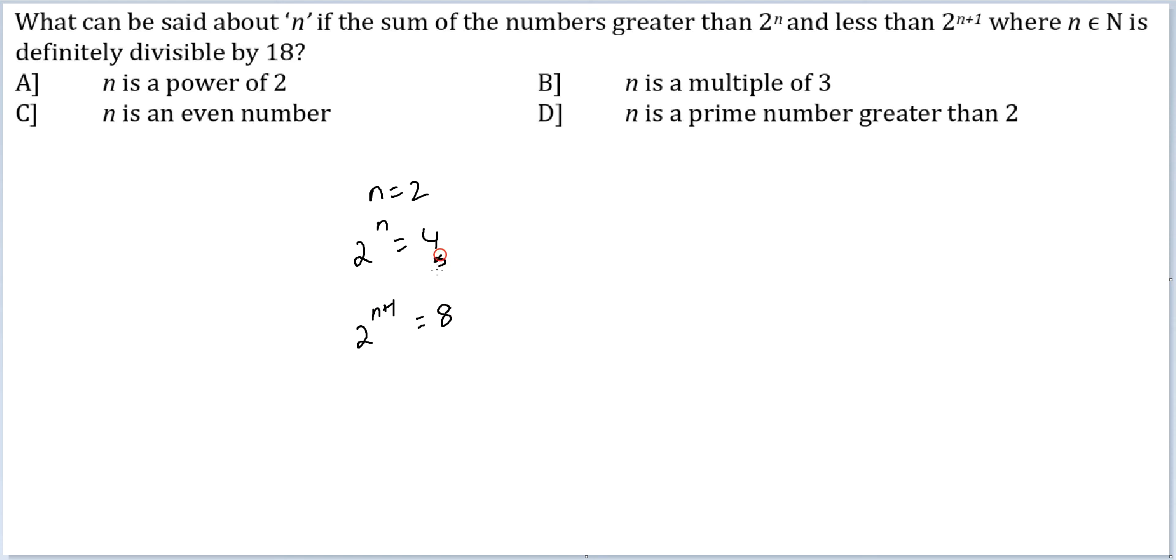2^(n+1) would be equal to 8. So the numbers in between would be 5, 6, 7. Their sum is 18 itself. So yes, for n equal to 2 these conditions are getting satisfied.